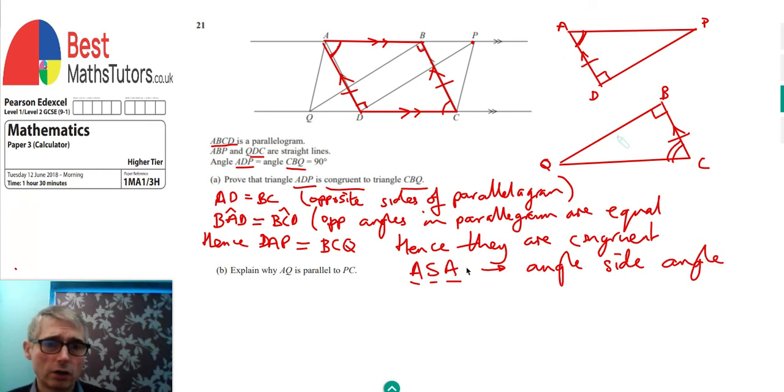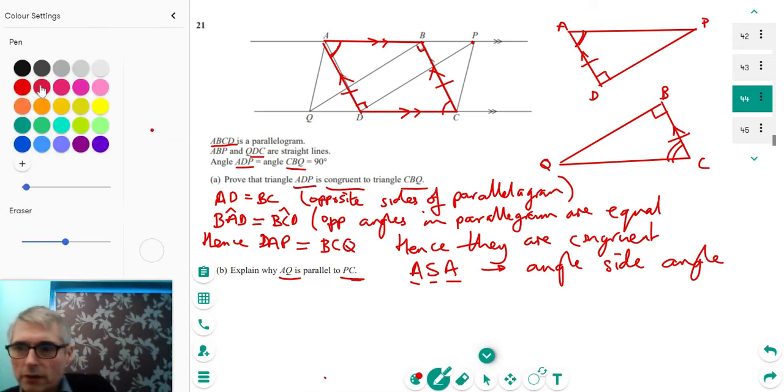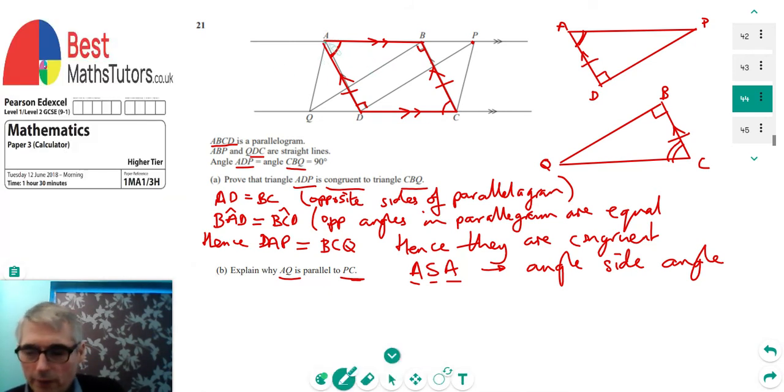So now we've got to look at explaining why AQ is parallel to PC. So let's just have a look at what we are talking about there. We're talking about, I'll just change the colour on the pen, just to try and show this a little bit clearer. So, pick green for this one. Right. So we've got, trying to show that AQ here is equal to PC. So we've got to try and show that they are parallel. Okay, let's see if we can do that.